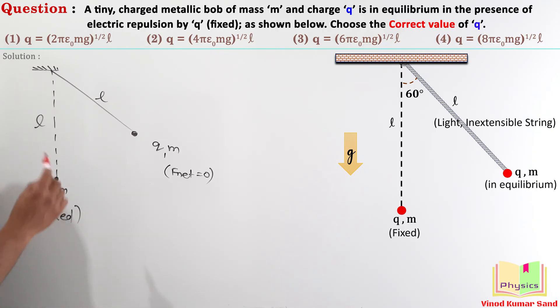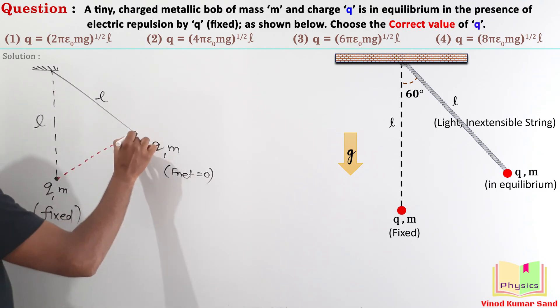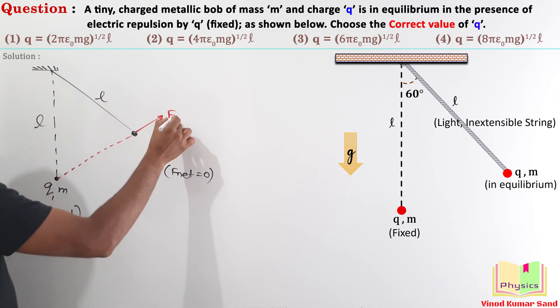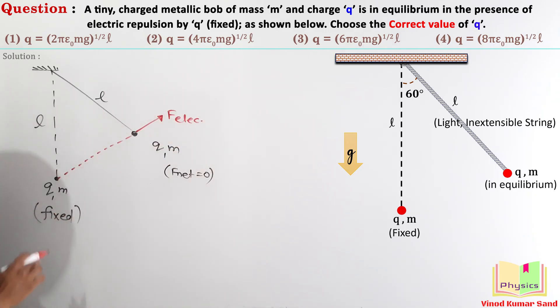According to Coulomb's law, the electrostatic force acts along the straight line joining the charged particles. On this charged particle the electric force is shown along the straight line like this. The gravitational force Mg is here and the tension T is like this. This angle is given as 60 degree.